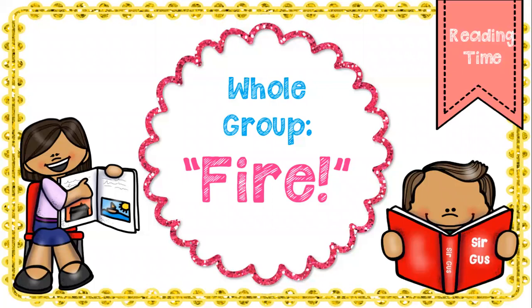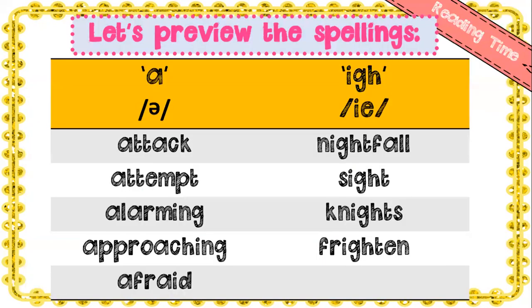Now look in your packet for workbook page 8.3, which is pages 47 and 48. We're looking for the story 'Fire.' Here are some sounds and words you're going to hear in 'Fire.' You've got the schwa sound and you've got the long 'i' sound spelled 'igh,' like your spelling words. Let's first preview these spellings and read these words together.